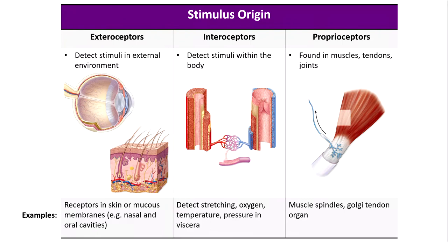Proprioceptors — from the Latin proprius, meaning 'one's own,' the same root as 'property' or 'proprietary' — are receptors that tell you something about your own body, specifically your body's movement and orientation. These are the receptors found in muscles, tendons, and joints that are able to detect body and limb movement.